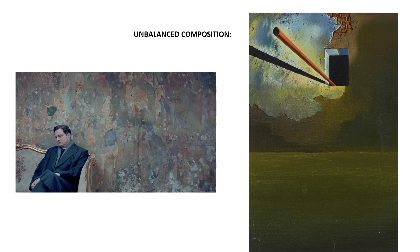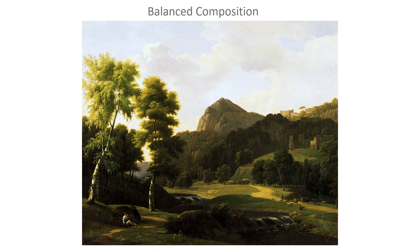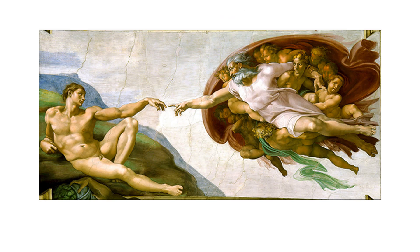Unbalanced compositions like these tend to create a sense of tension, of something about to happen. They're not as calm and don't have the relaxed impact that a balanced composition does. This is a neoclassical landscape — if we divide it in half, we have the big hill on this side and lots of trees and some architecture, but it's balanced by the bigger trees and the figures in the foreground, carefully balanced. Dividing this in half, we have a robed god figure with all these other figures balanced by Adam with some of the landscape.